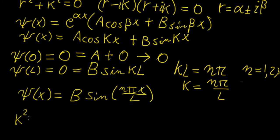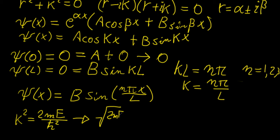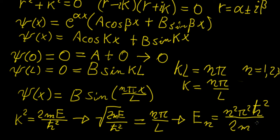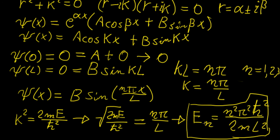The second part relates back to the energy. Since k² = 2mE/ℏ², and k = nπ/L, we equate these to get the energy eigenvalues: E_n = n²π²ℏ² / (2mL²). The eigenvalues represent all the discrete energy levels of the system, each determined by the integer n. The ground state energy corresponds to n = 1.